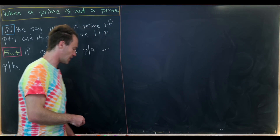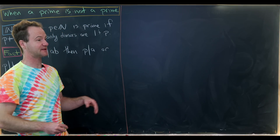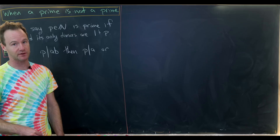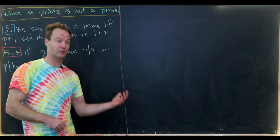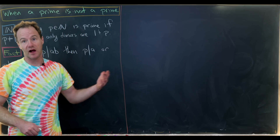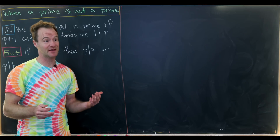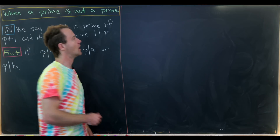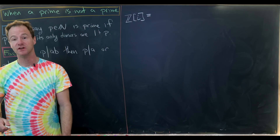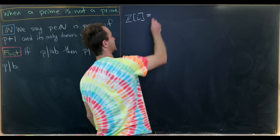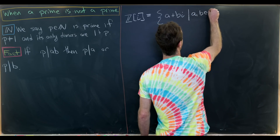I'd like to start by looking at the question of when primes are not primes in number systems different from the integers or natural numbers. We'll look at extensions of the integers where primes inside the integers are not primes in these extensions. Let's get started with something known as the Gaussian integers, denoted Z adjoin i — all combinations of A plus Bi, where A and B are integers.